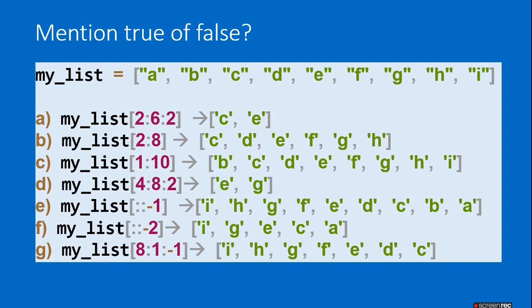my_list[1:10] gives from position 1 (B) up to I. my_list[4:8:2] starts from position 4 (E) and with step 2 gives ['E','G']. my_list[::-1] omits start and end so it reverses the whole list. my_list[::-2] skips one position giving ['I','G','E','C','A'].